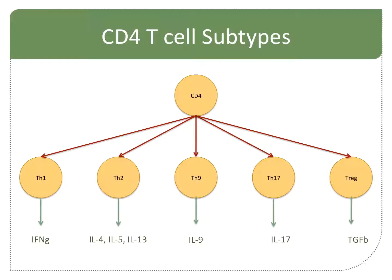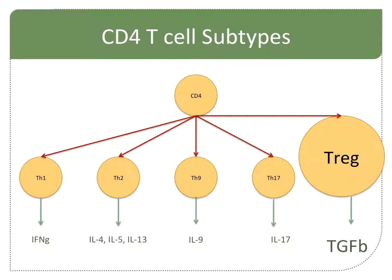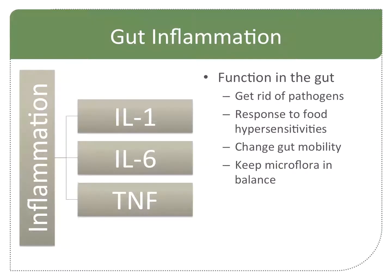Treg is our TGF-beta response, and that is the response we're talking about when we talk about the gut and our response to food — we really want to have this T-regulatory response. What about gut inflammation? Those same cytokines we talked about with the brain — IL-1, IL-6, and TNF-alpha — are involved in the gut. Their job is to get rid of pathogens, but they're also made in response to food hypersensitivities because they change gut motility and keep microflora in balance.